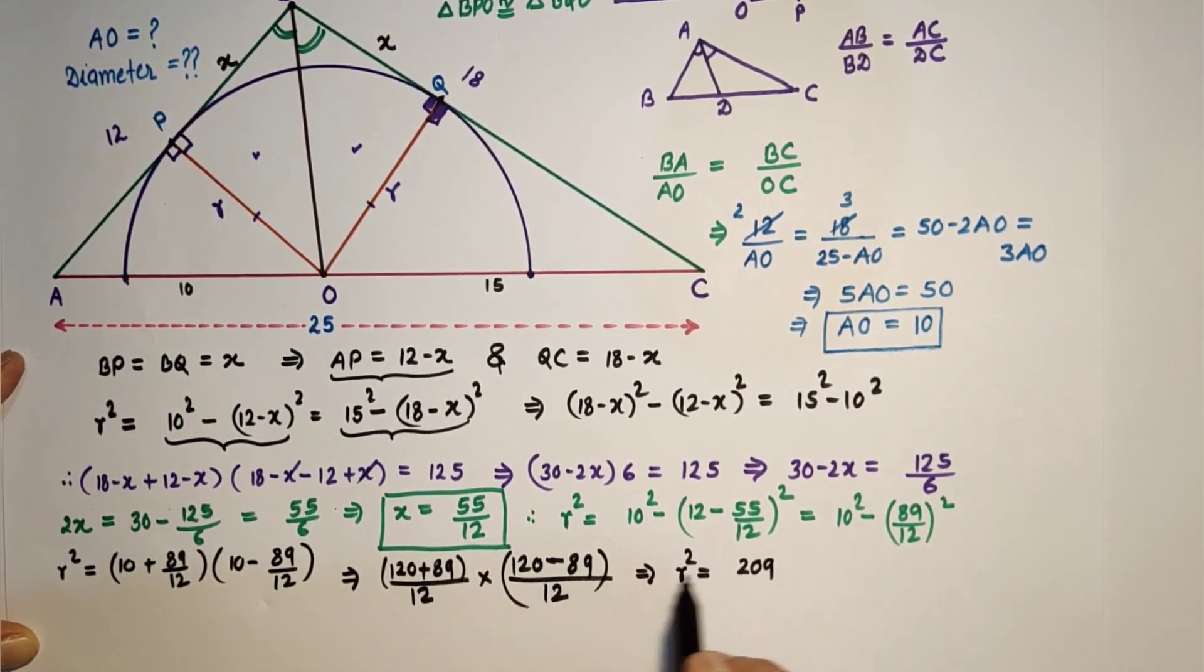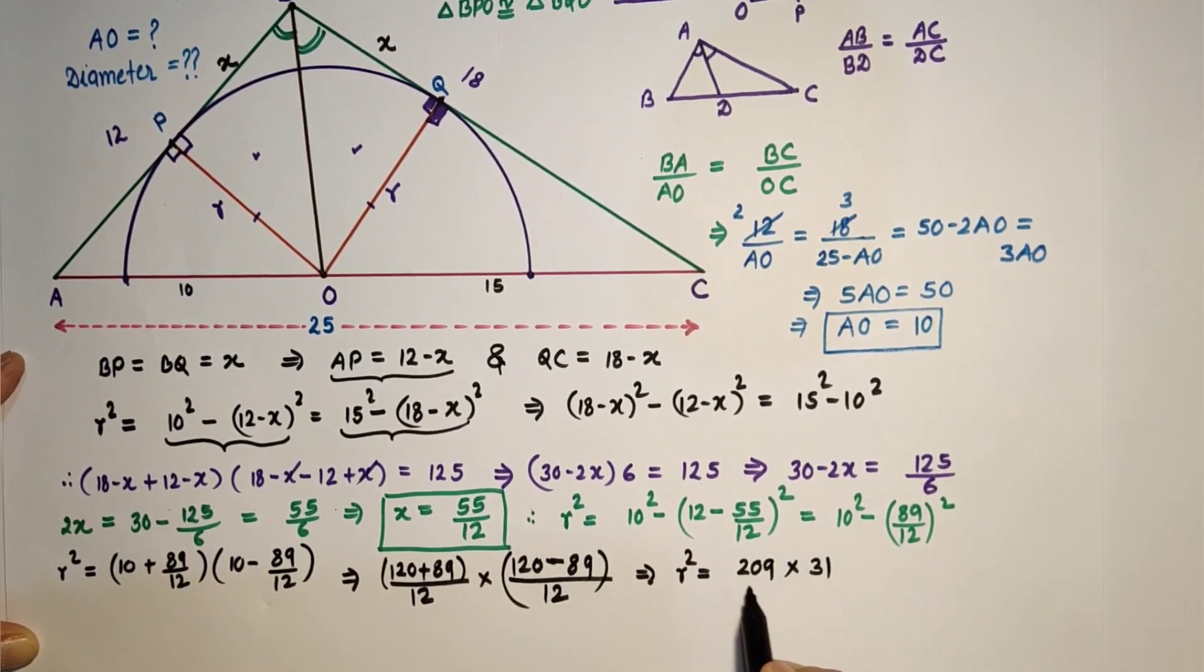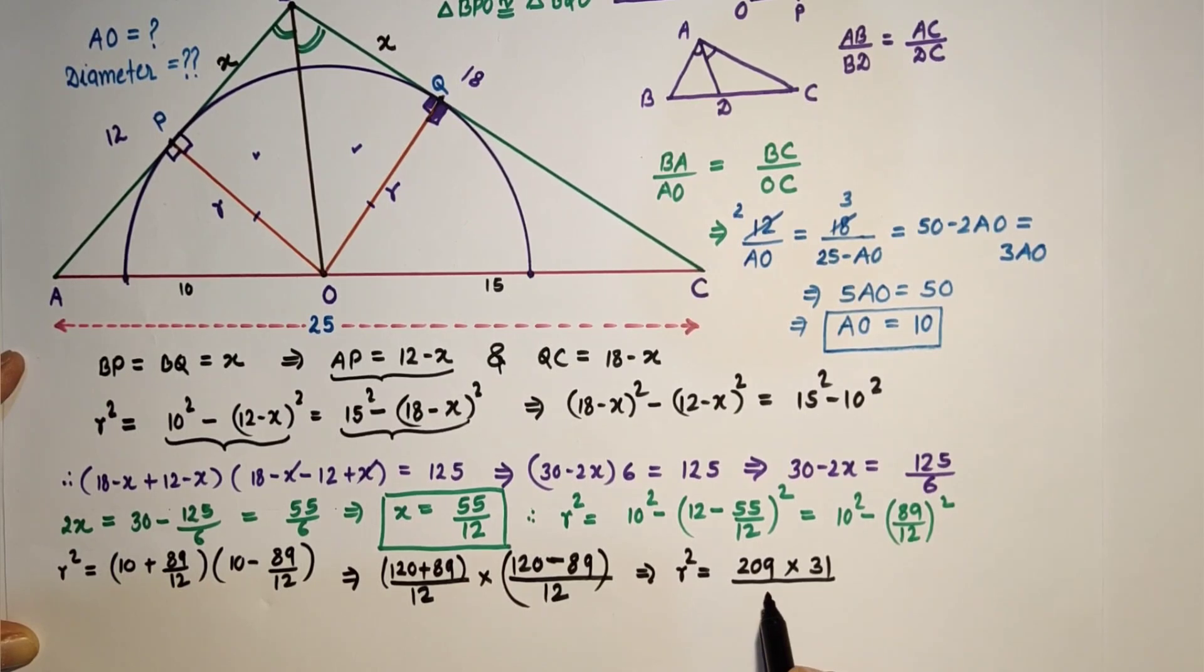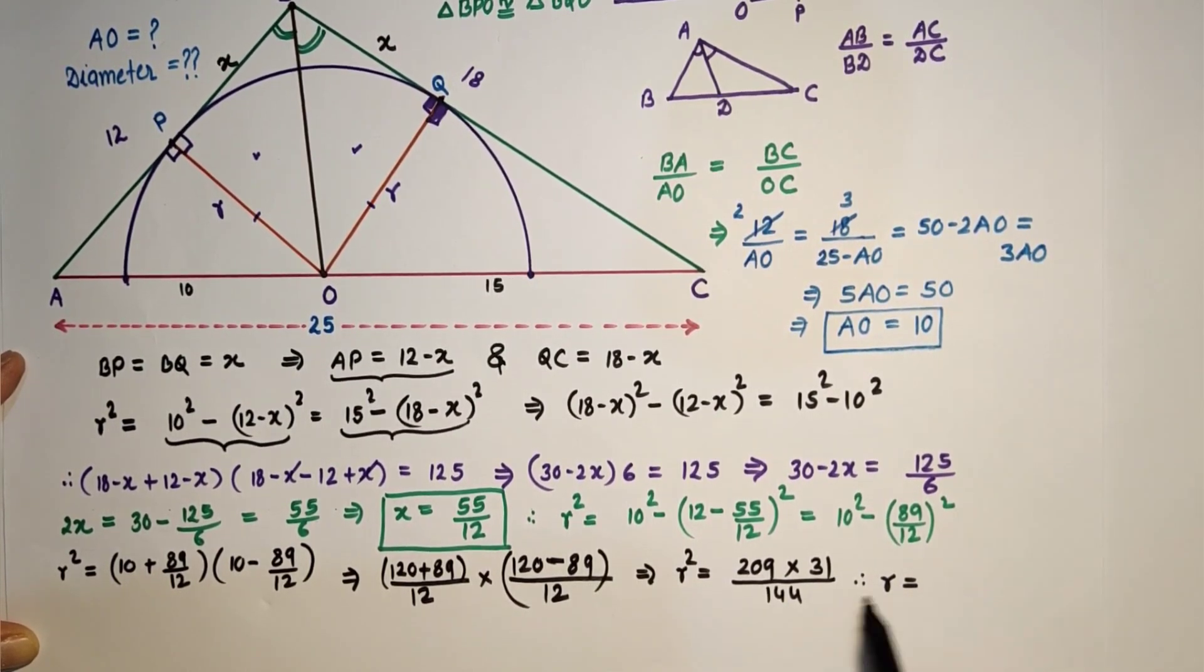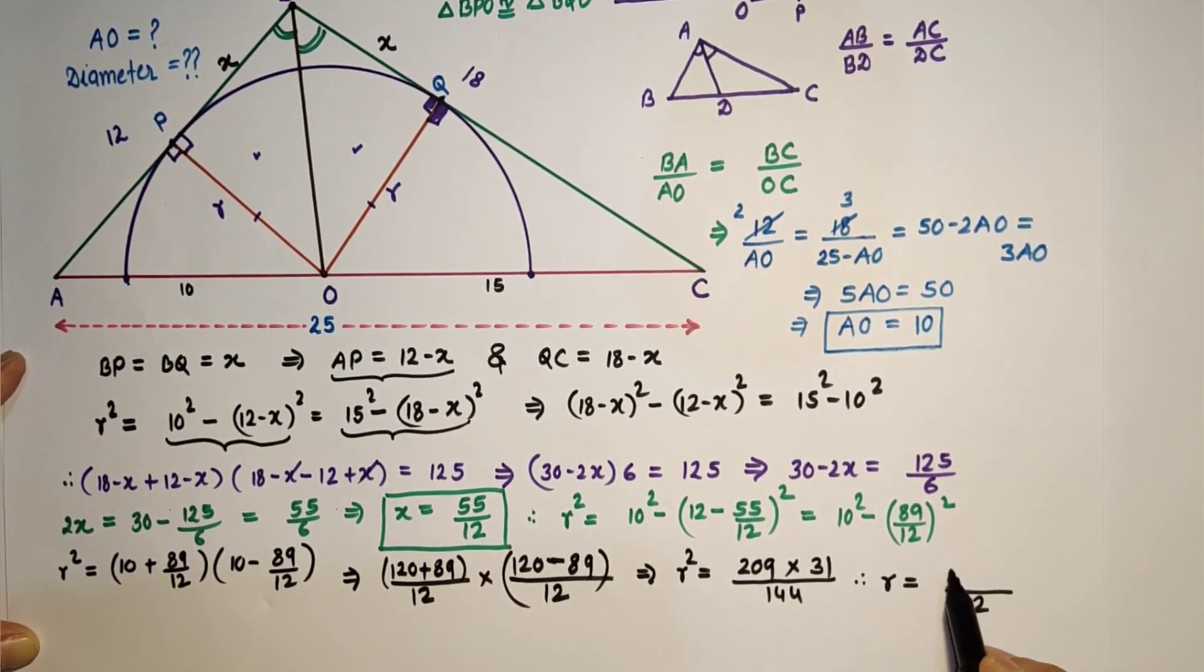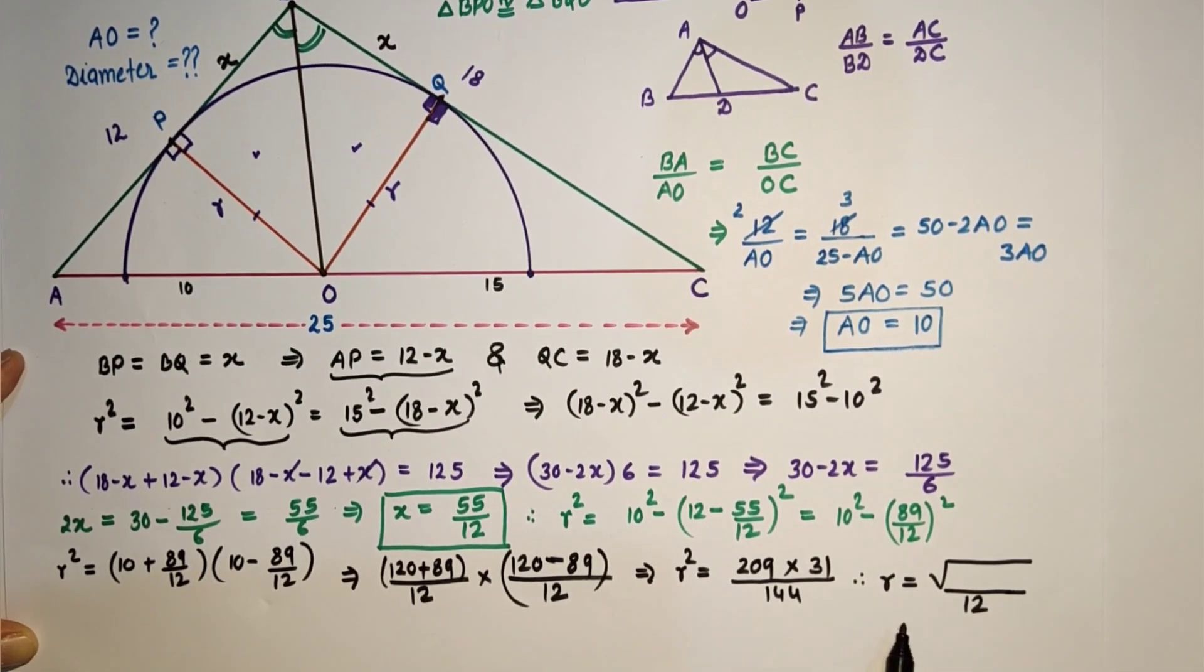120 minus 89 is 31 by 144, means 12 into 12 is 144, which is equal to R, under root of this. Square root of 144 is 12, and this is under root of, if we multiply we will get it 6479.